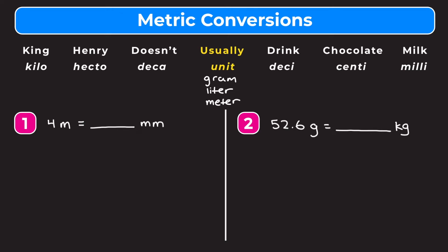In example one, we have 4 meters equal to some number of millimeters. This chart is going to tell us how many times we have to move our decimal point and in which direction. We're starting with meters and we want to go to millimeters. To get from meters to milli, we have to go one, two, three places to the right.